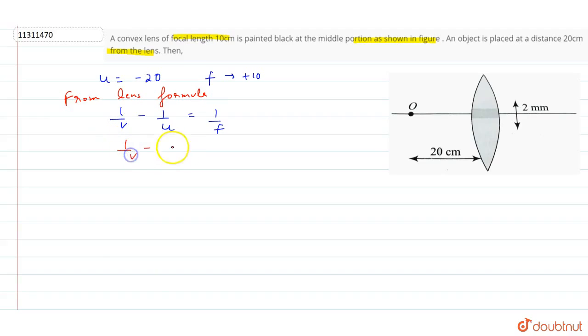So, 1/V - 1/(-20) = 1/10. Therefore, 1/V = 1/10 - 1/20. V equals 20 cm.